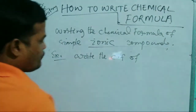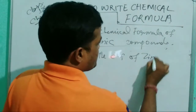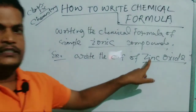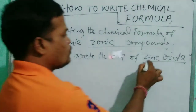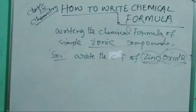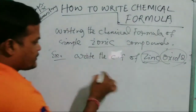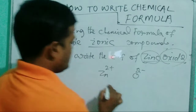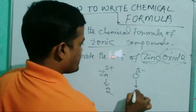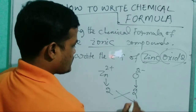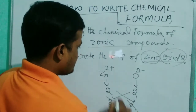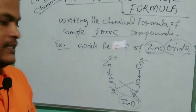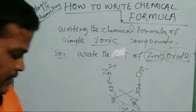Next, the chemical formula of zinc oxide. In zinc oxide there are two elements — zinc and oxygen. Zinc is Zn2+ and oxygen (oxide) is 2−. Write valency 2 for zinc and 2 for oxygen. Cross over and cancel: both are equal, so they cancel. The chemical formula is ZnO — this is the chemical formula of zinc oxide.